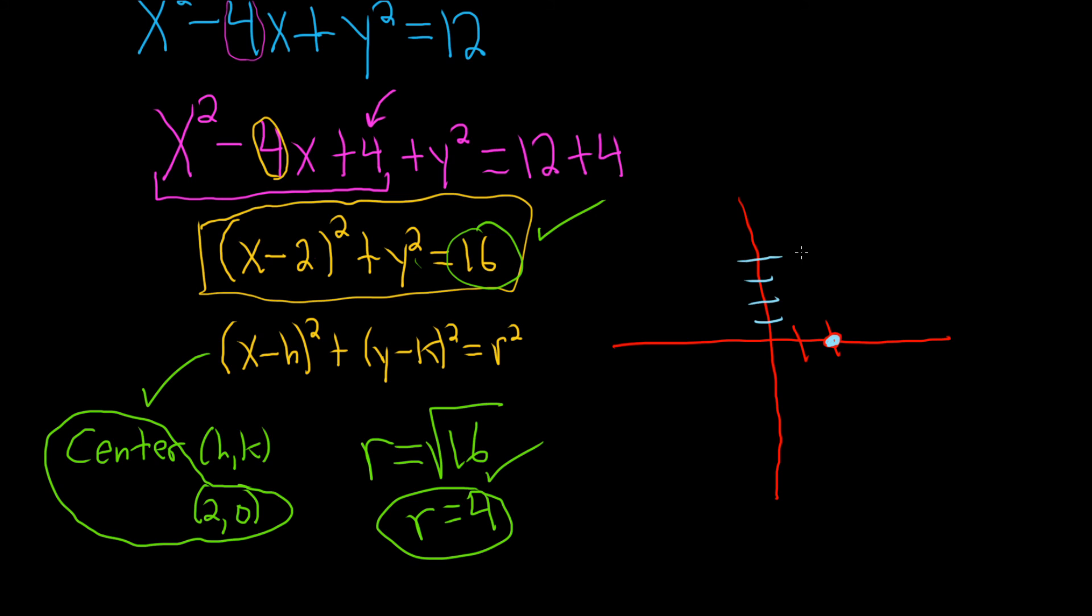So 1, 2, 3, 4—you go up 4 from the center. And then right 4: 1, 2, 3, 4. And then down 4: 1, 2, 3, 4. And then left 4: 1, 2, 3, 4. Oh, there it is.